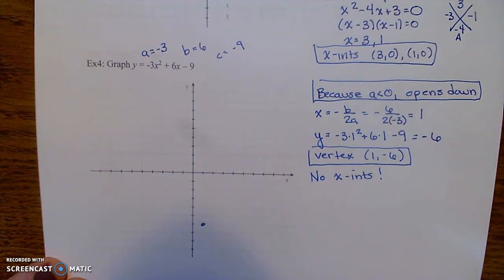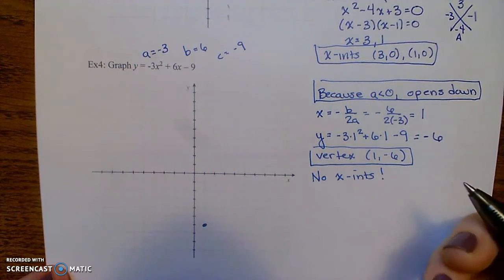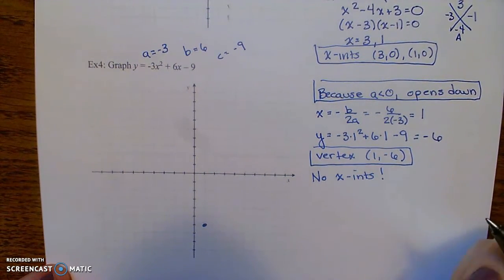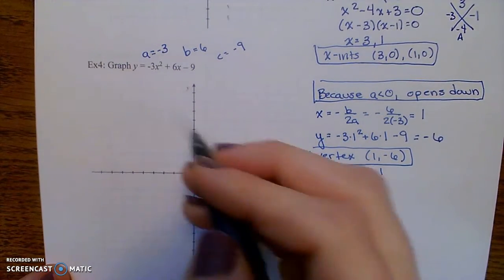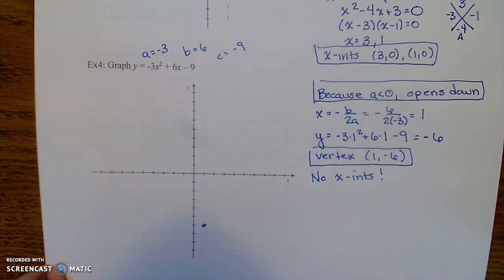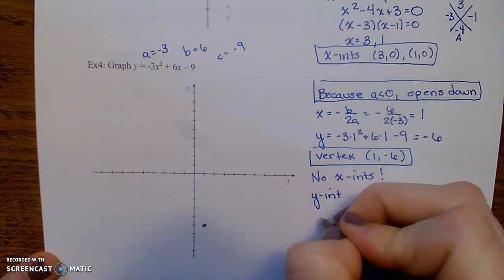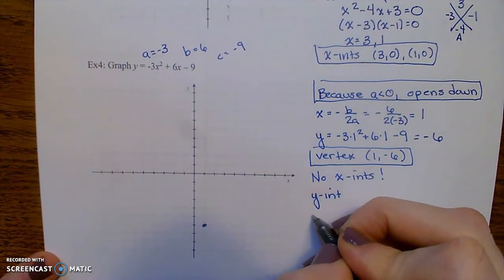So I might as well not even solve for them because if I tried to, what I would end up with is two complex numbers that I'm not going to be able to plot on this graph. So I'm not even going to bother with the x-intercepts. But I can find my y-intercept by plugging in 0.